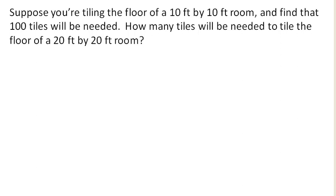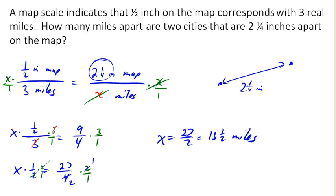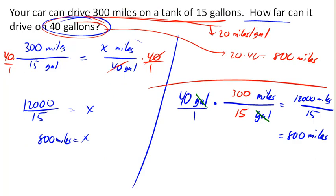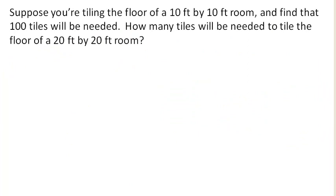Now it's really good to think about how things scale. So if we think back to the map scaling problem, if the map distance were to double, then the real world distance would also double. With our gas usage problem, if the number of gallons doubles, then the number of miles we can drive doubles as well. And this is sort of a common feature of things that scale proportionally.